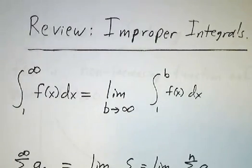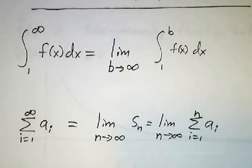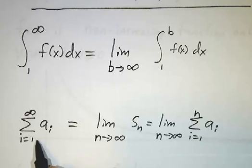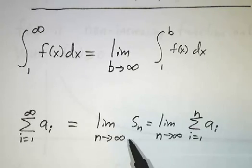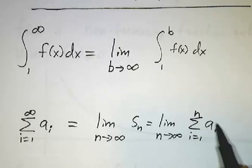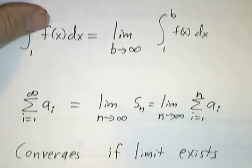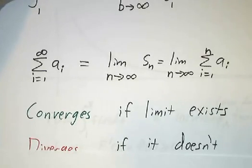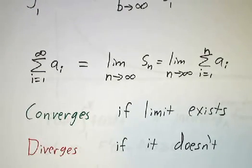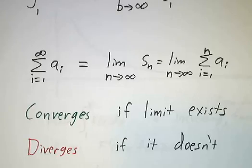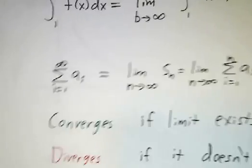This is very much like what we've been doing with sums. We don't know what it means to add up an infinite number of numbers, so we just add up a finite number — the first n numbers — and look at what happens when n gets bigger and bigger. In both cases, if the limit exists we say it converges; if the limit doesn't exist, we say it diverges. So improper integrals and these sums have something to do with each other.